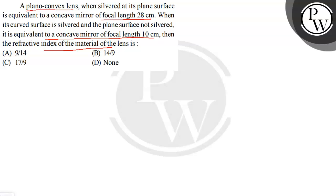This is a plano-convex lens — it has a plane side and a curved (concave) side. Let the radius of curvature of the curved part be R and the refractive index of the material be mu. We are given two cases.